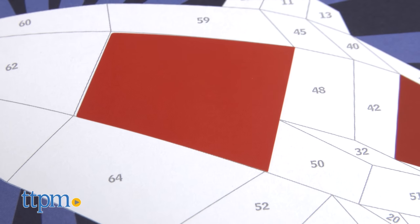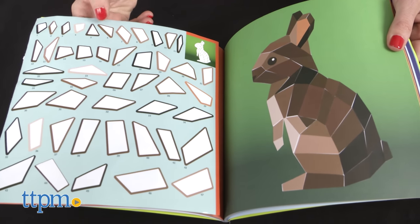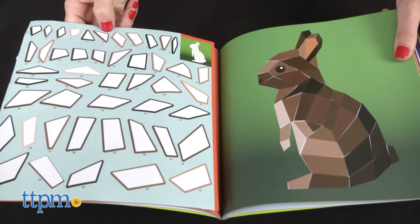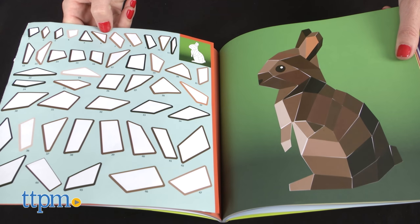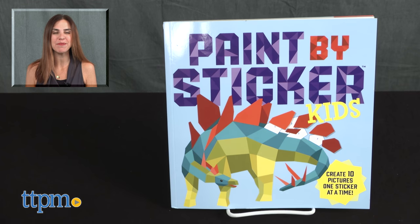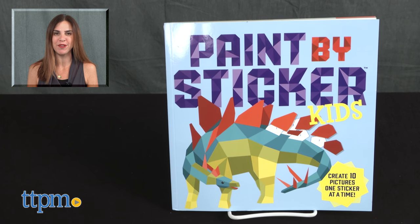And with no mess to clean up, paint by sticker kids would be great for travel on a plane or train or while waiting for a meal at a restaurant. For where to buy and current prices, find us at TTPM and subscribe to our YouTube channel for more reviews every day.